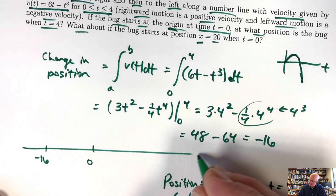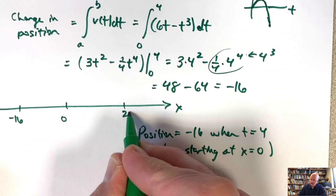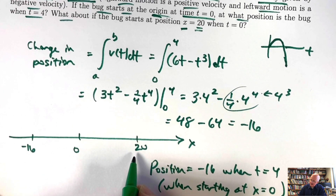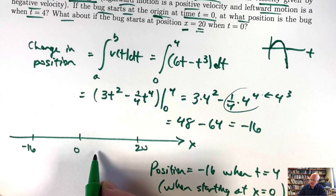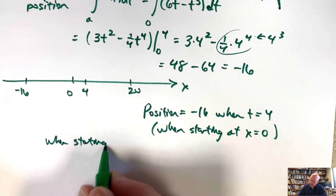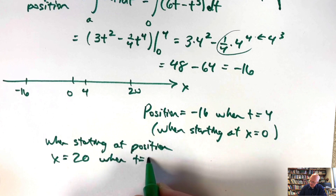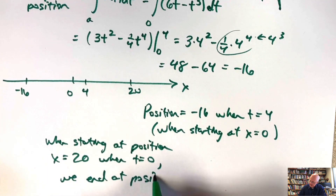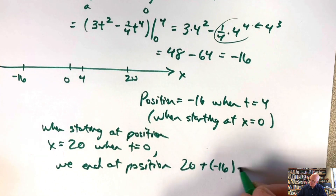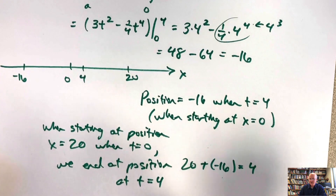If the bug starts at position 20 when t = 0, the change in position is still −16. The final position is 20 + (−16) = 4. So starting at x = 20, the bug ends at position x = 4 at t = 4.